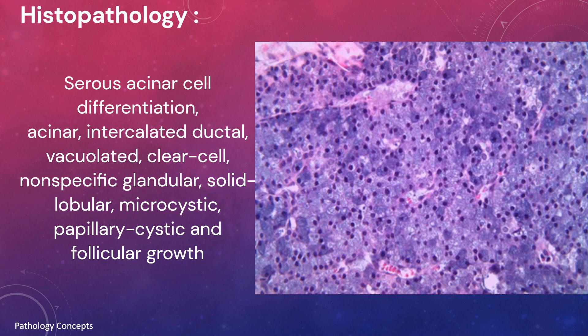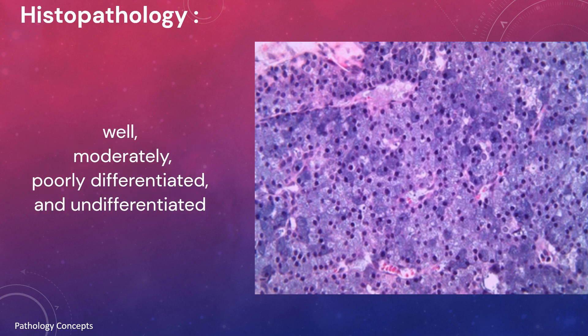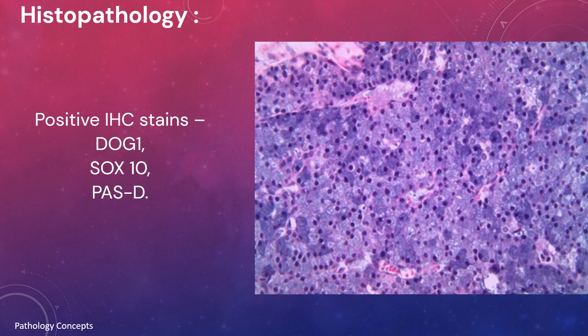Additional patterns include papillary cystic and follicular growth patterns. It shows large tumor cell lobules or nests with minimal intervening stroma. Tumor grading has four categories: well-differentiated, moderately differentiated, poorly differentiated, and undifferentiated. The positive IHC stains are DOG1, SOX10, and PASD.